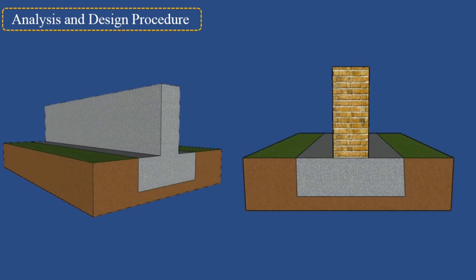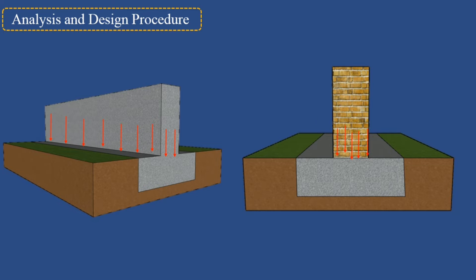Wall footing should be designed to safely support structural or non-structural walls and transmit and distribute the loads to the soil in such a manner that the load-bearing capacity of the soil is not surpassed. This includes avoiding excessive settlement and rotation and maintaining sufficient safety against sliding and overturning.